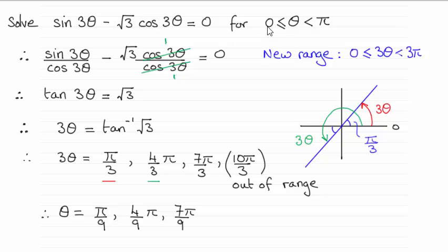So I need to multiply zero, theta, and pi by three, as you can see I've done here. So this gives me my new range.